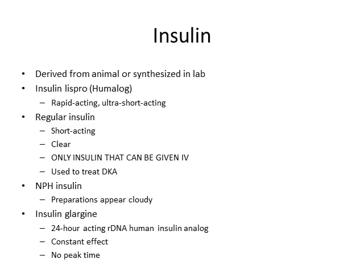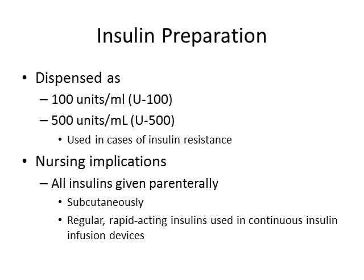When preparing insulin, make sure you have the right syringe — insulin is dispensed in units and requires a syringe that measures units, not a tuberculin syringe. Insulin can come in 100 units per mL or 500 units per mL. It must be given parenterally — subcutaneously — and be aware of your sub-Q sites. Regular and rapid-acting insulins can also be given in a continuous infusion device; insulin pumps are commonly used with brittle diabetics, placed in the abdomen.